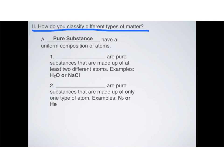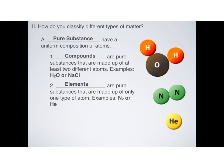There are two big categories of matter. The first one is called pure substances. A pure substance is something that has a uniform composition of atoms. There are two types of pure substances: compounds, which are pure substances made up of at least two different atoms — for example, water and salt — and elements.